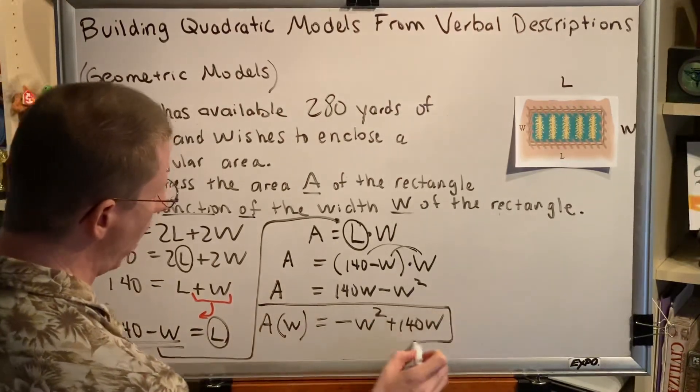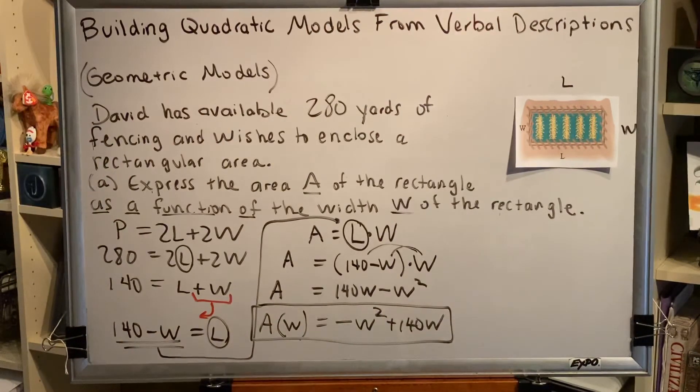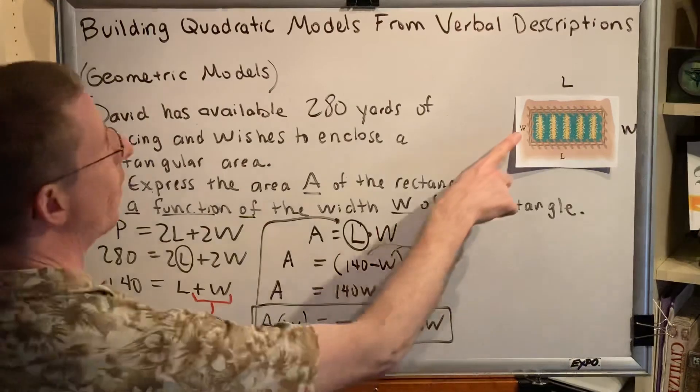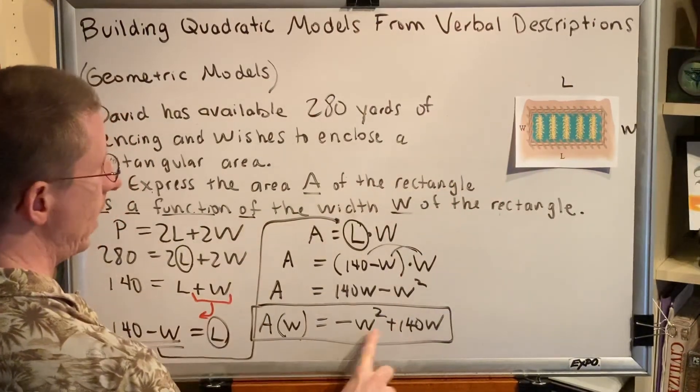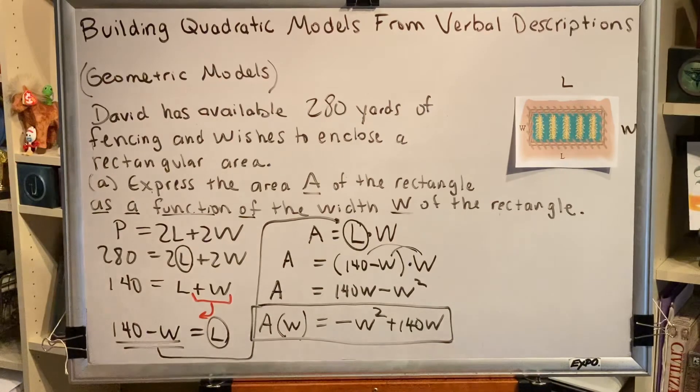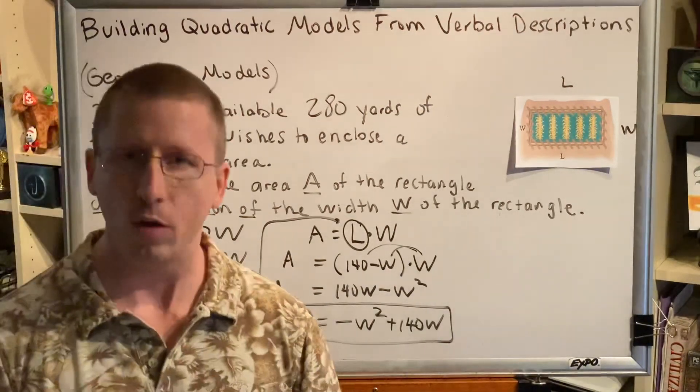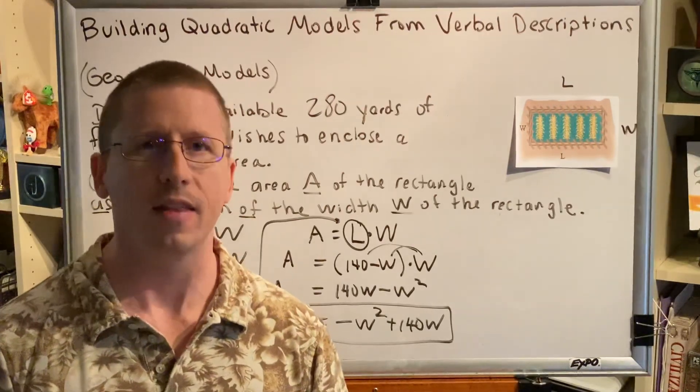All right, we now have a formula that allows us to determine the area of the rectangle by assuming a value for W, plugging it in here and here, crunching the numbers, and that will tell us the area. This is part A of this problem. We will continue this problem with parts B and C in the next video.